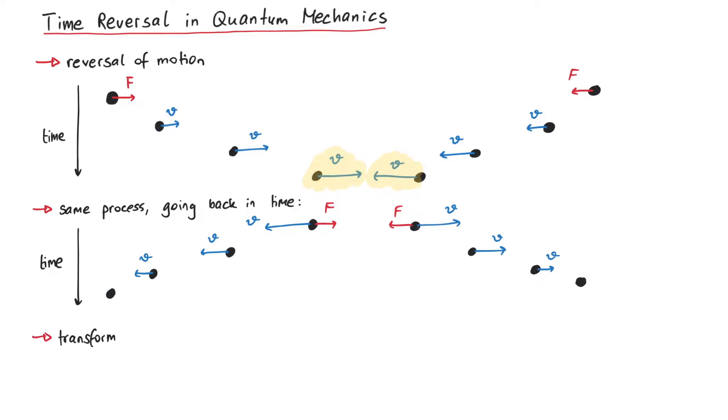We can summarize the time reversal operator via these relations that show how certain operators transform under a time reversal operation. While position stays the same, momentum gets reversed. And since angular momentum is a combination of position and momentum, it is also odd under a time reversal operation.